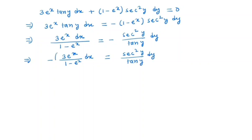Now we will take the integral on both sides. So for the left hand side integration we put 1 - e^x equals p. So we have -e^x dx is equal to dp.